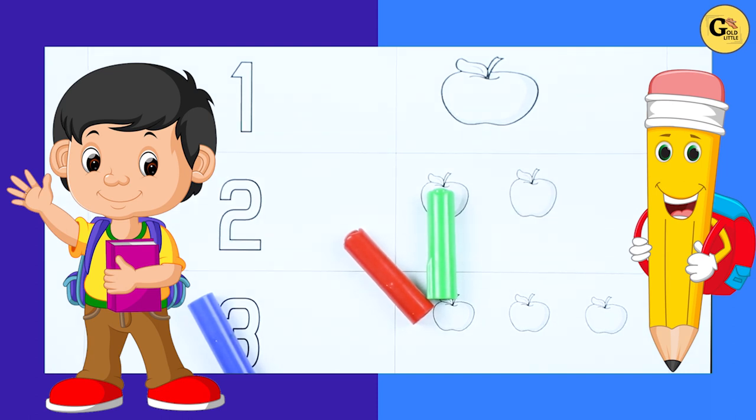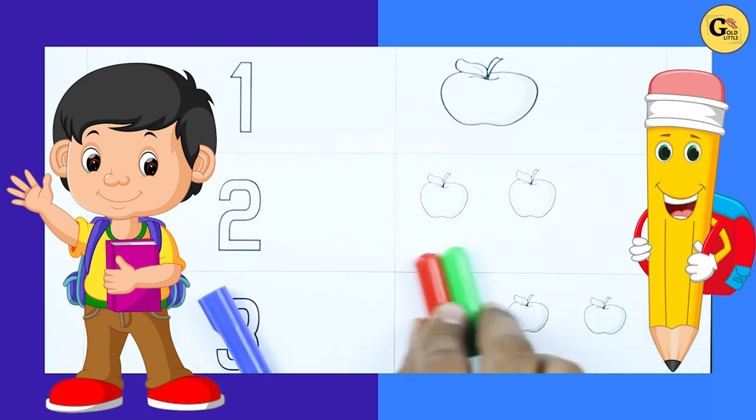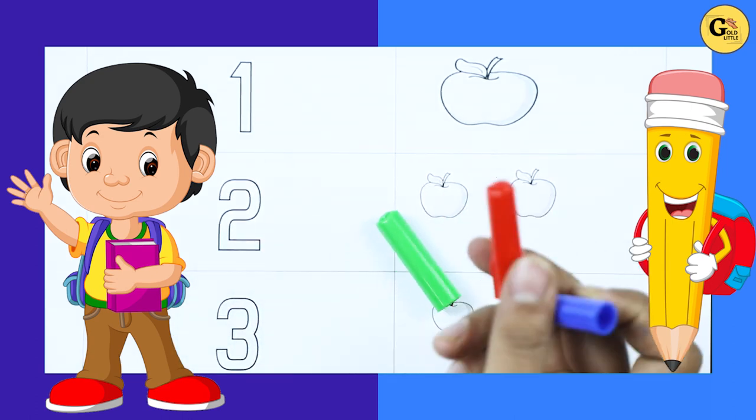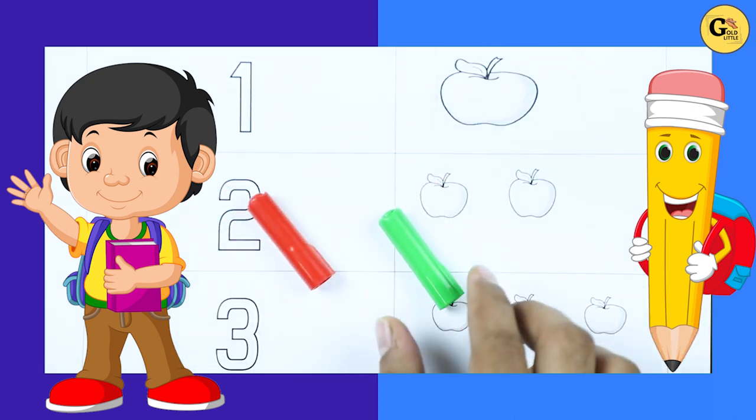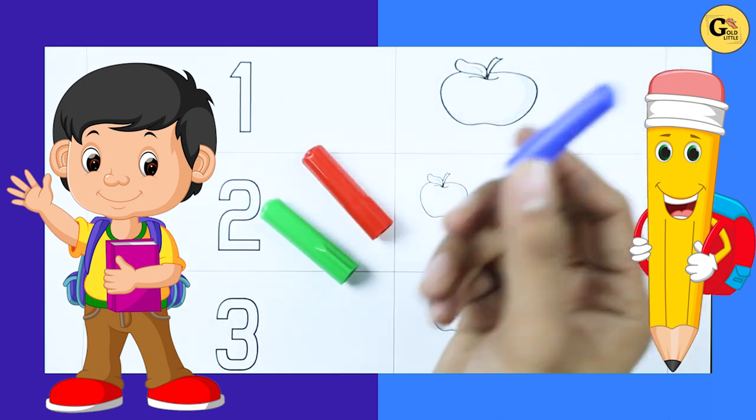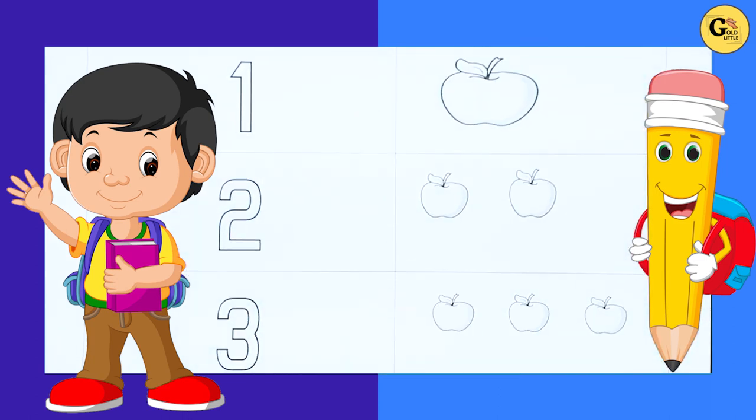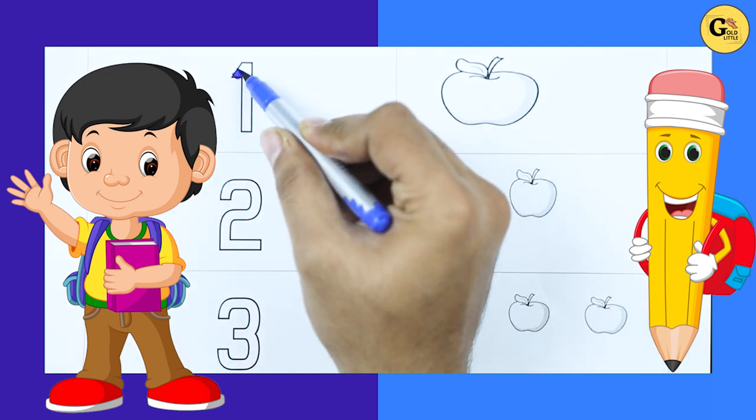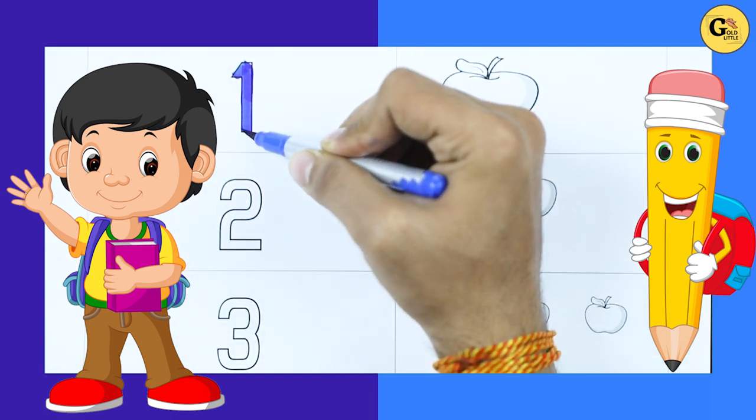2 apples, 3 apples with color. Red color, green color, blue color. Number 1 with blue color.